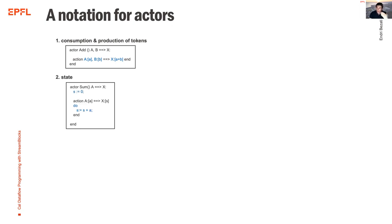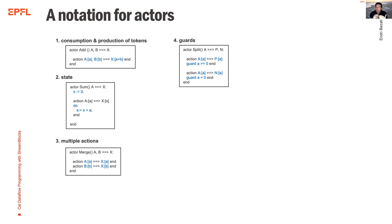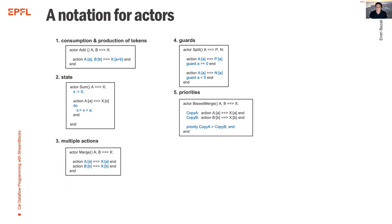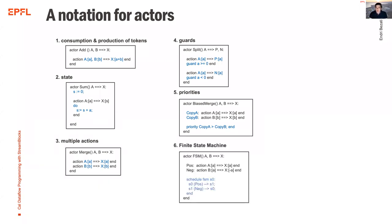An actor can have state variables. We can define multiple actions inside an actor and guard their execution. For example, we select one of two defined actions depending on the value of a token — the first action requires A to be greater or equal to zero. We can define priorities on actions, so for a bias merge, if tokens arrive on both ports A and B simultaneously, copy A executes first, then copy B. We can also define an explicit state machine on how to execute actions, and provide a mechanism for describing processes.